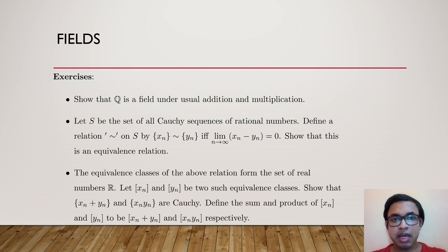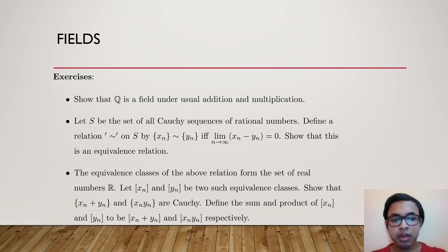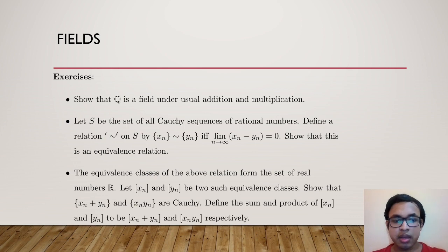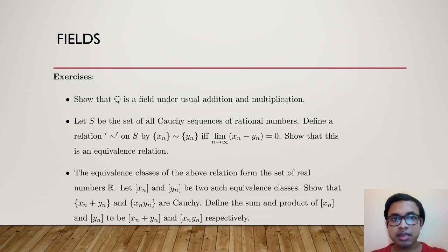Consider the equivalence classes of this relation — this set of equivalence classes is the formal definition of the real numbers. Let [x_n] and [y_n] be two equivalence classes. Show that x_n + y_n and x_n·y_n are both Cauchy sequences. Define the sum of the equivalence classes as [x_n + y_n] and the product as [x_n·y_n], which are well-defined because those sequences are also Cauchy.